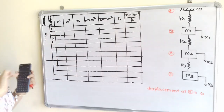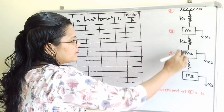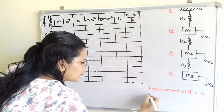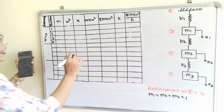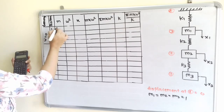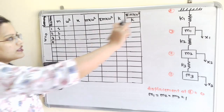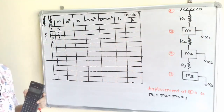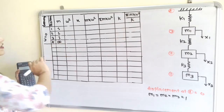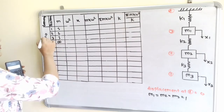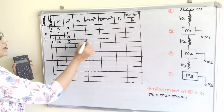Next is the mass column. We consider M1 = M2 = M3 = 1. So for positions 1, 2, and 3 we write 1, 1, 1. For position 4, which is the fixed end, we consider the mass as infinity. For omega square: 0 squared is 0, so we write 0 for all positions.